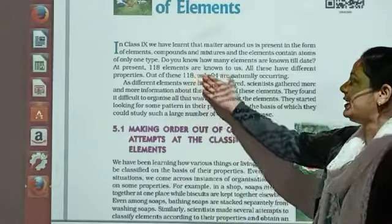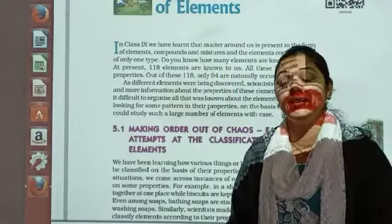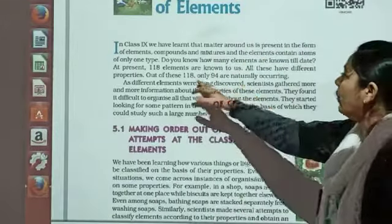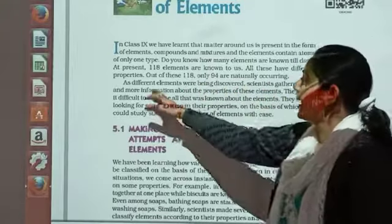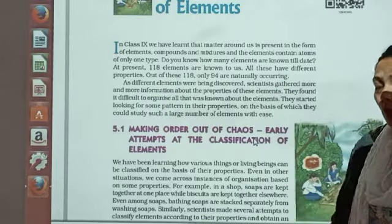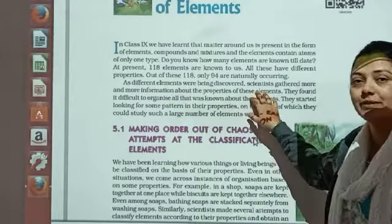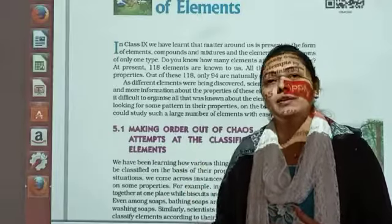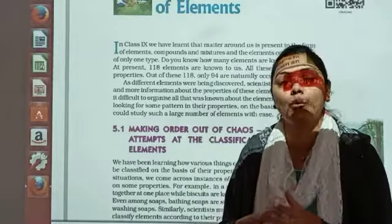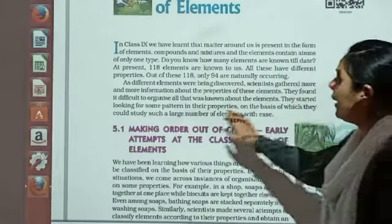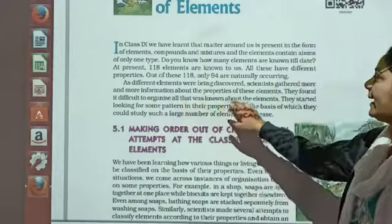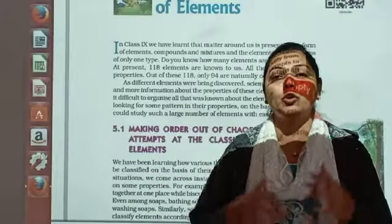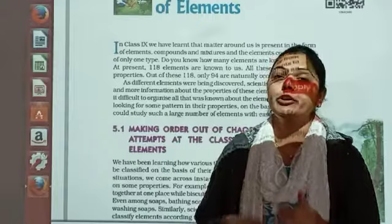At present, 118 elements are known to us out of which 94 are naturally occurring. As different elements were being discovered, scientists gathered more and more information about the properties of these elements. They found it difficult to organize all that was known about the elements.